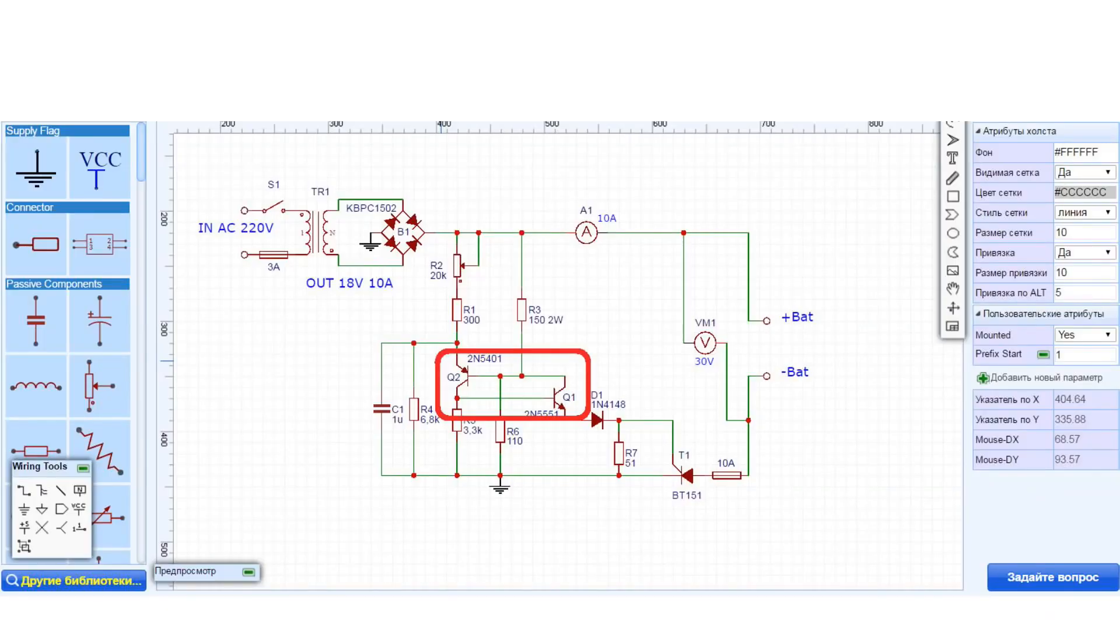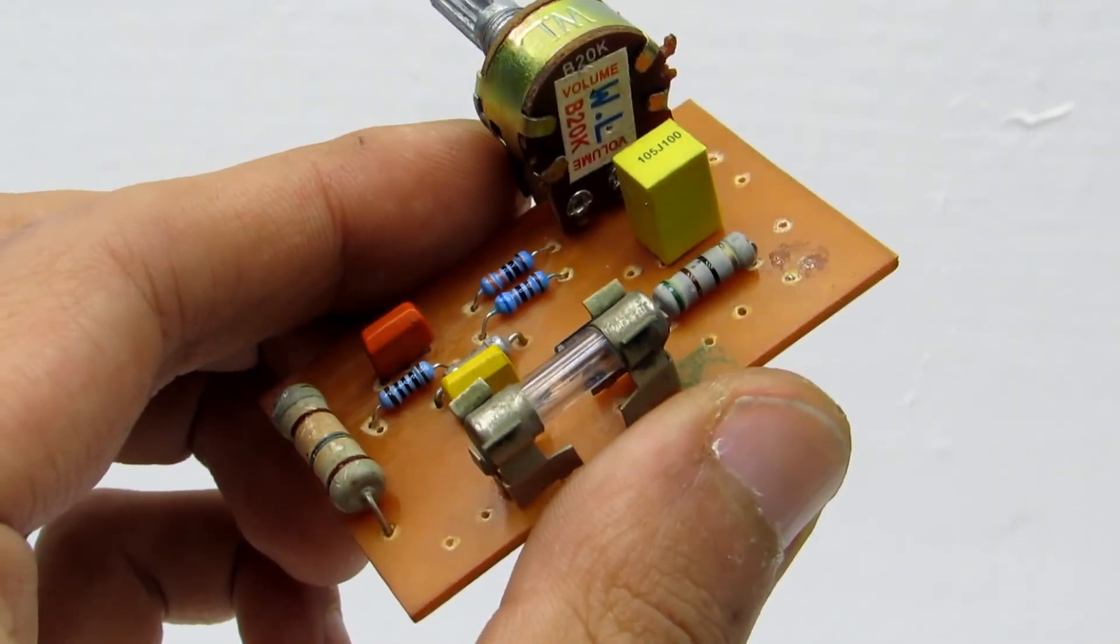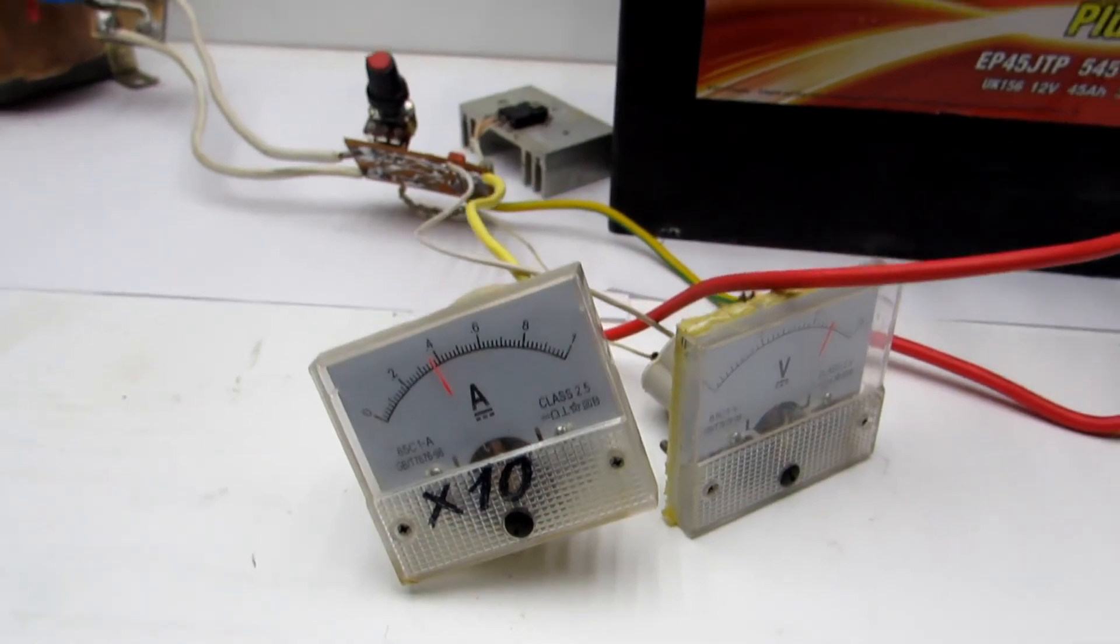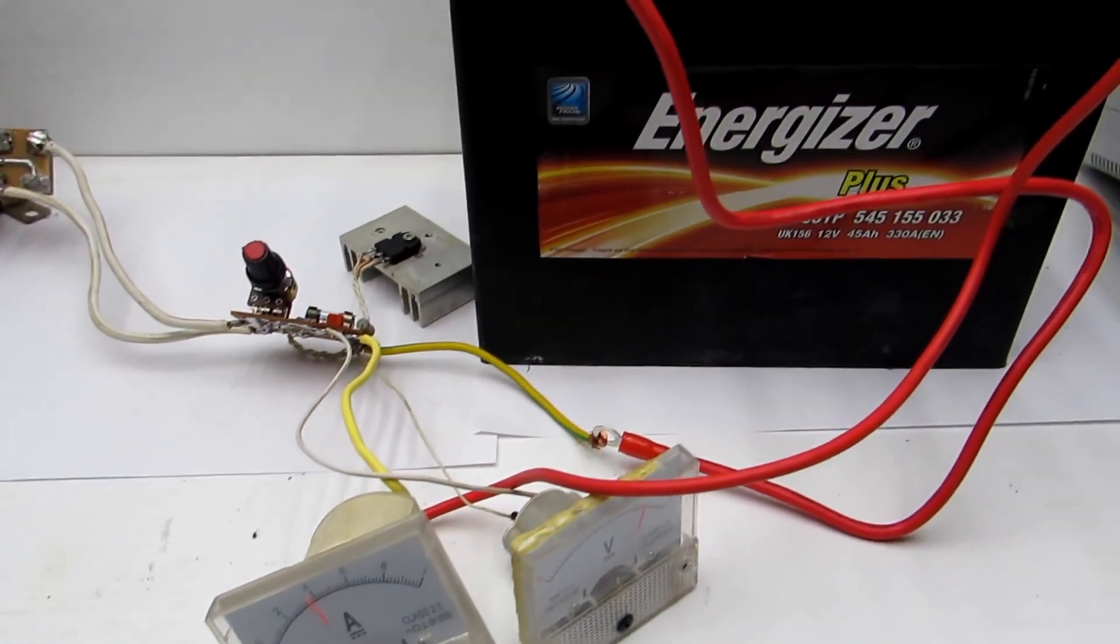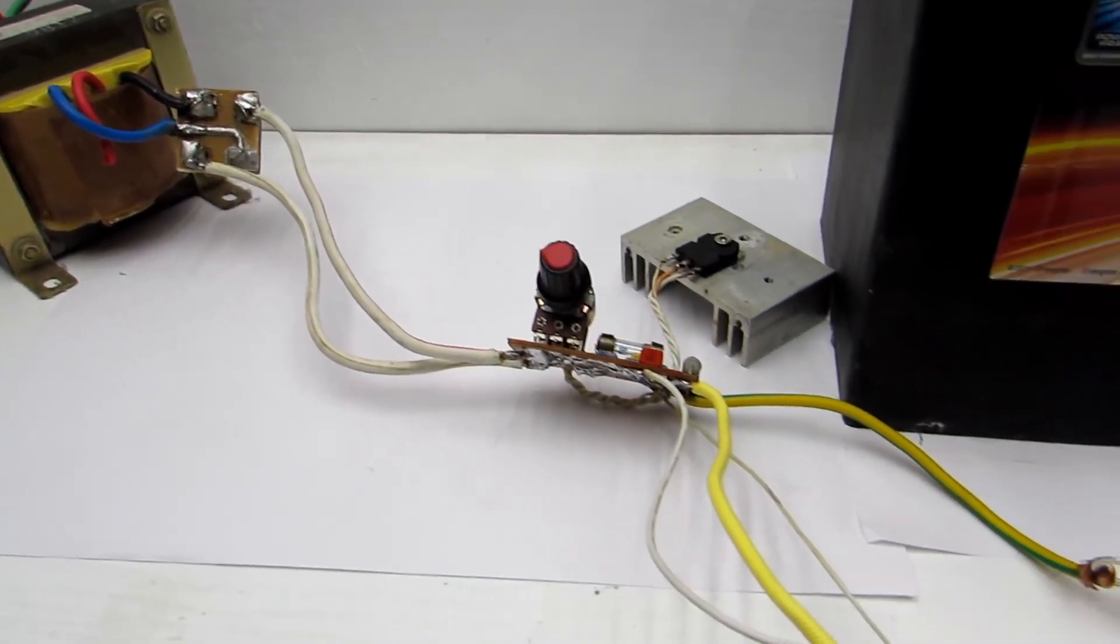The pulse generator is assembled on a low power complementary pair of transistors. You can use any suitable. The output current reaches up to 10 amperes. Therefore, it is possible to effectively charge the batteries with the capacity of up to 100 ampere per hour.